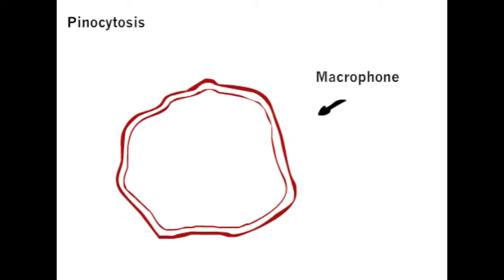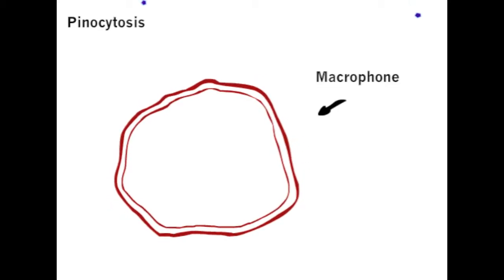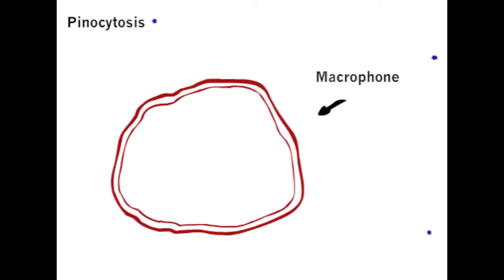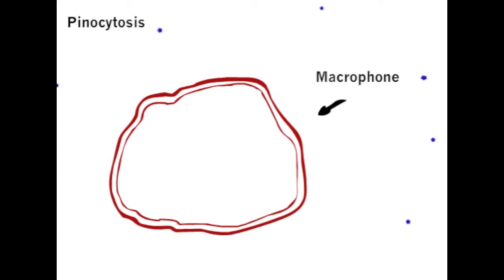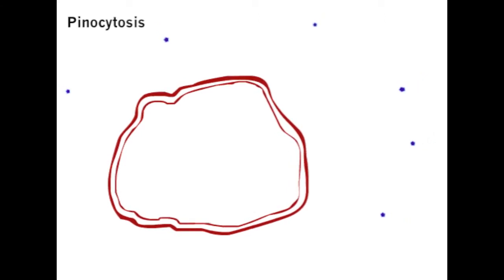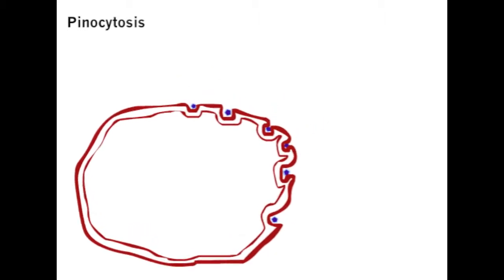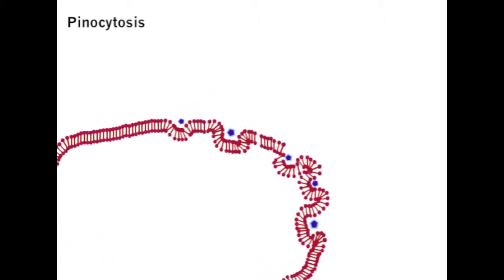The next part of vesicle transport is pinocytosis. This is just like phagocytosis, but the molecules that enter the cell are of a liquid, not a solid. Pinocytosis is much more common than phagocytosis because all cells undergo pinocytosis, while only specialized cells like the white blood cell undergo phagocytosis.